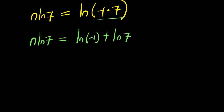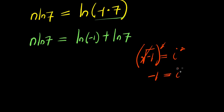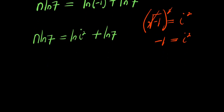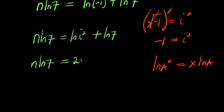Now let's consider this: the square root of negative 1 equals i. If you square both sides, that means negative 1 equals i squared. So n times natural log 7 equals natural log of i squared plus natural log of 7.